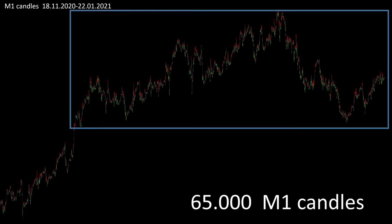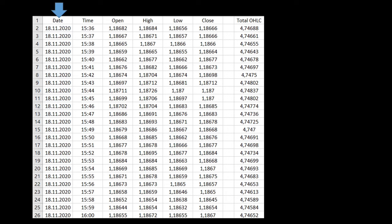First of all, I selected an equilibrium range from the last two months in order to achieve the highest possible price agreement. Over 65,000 M1 candles were analyzed during this period. It started on November 18, 2020 at 3:36 PM. Here is the column for the open, high, low, and close.